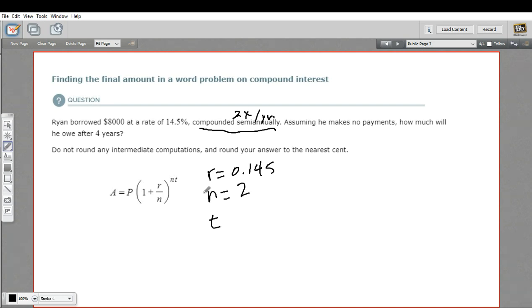And the number of years, well, let's see what the problem says. It says, assuming he makes no payments, how much will he owe after four years? So T here is four years.